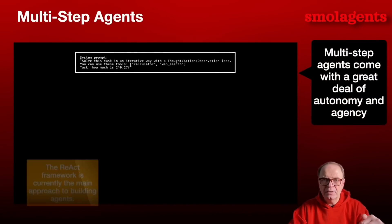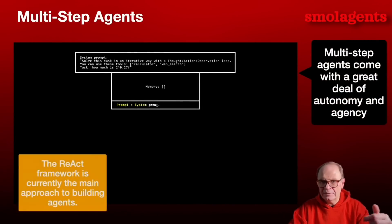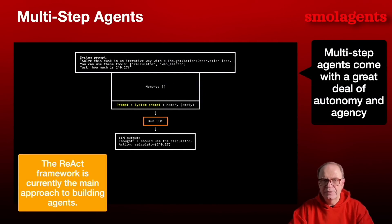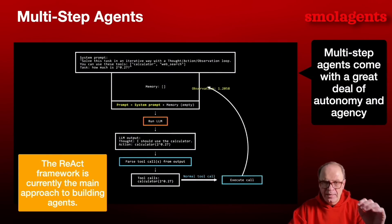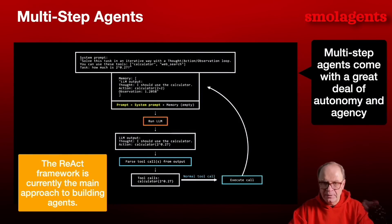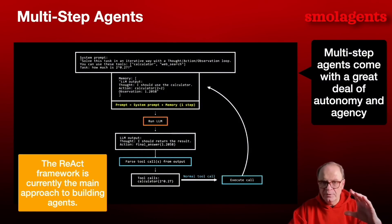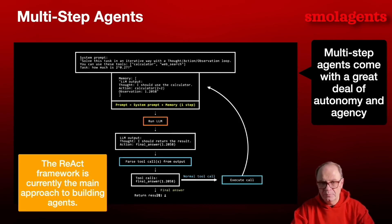HuggingFace agents inherit from multi-step agent, which means they can act in multiple steps — each step consisting of one thought or one task, and then one tool execution. They have built-in memory, which is updated as these multiple steps get executed, providing the agent the ability to combine multiple answers and come up with the best answer possible.